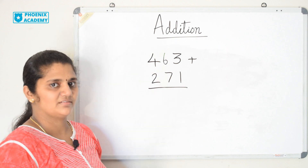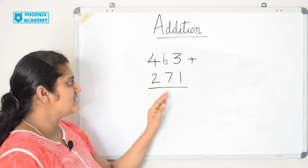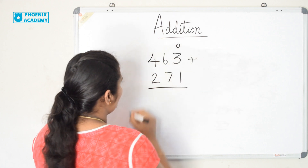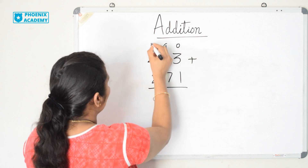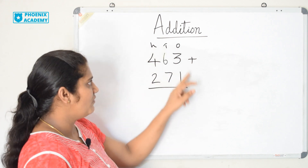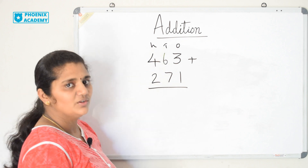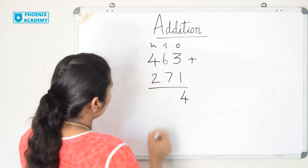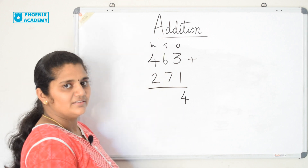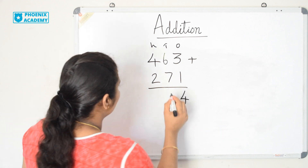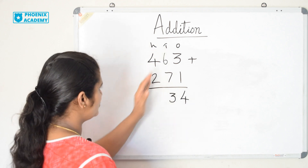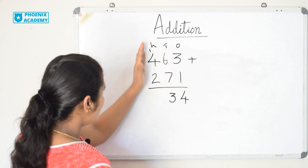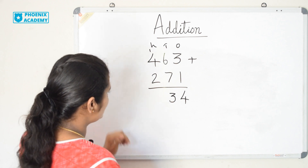Let us solve this example: 463 plus 271. 463 is 3 ones, 6 tens, and 4 hundreds. 271 is 1 one, 7 tens, and 2 hundreds. Let us add ones: 3 plus 1 is 4. Add tens: 6 plus 7 is 13. 13 is 3 ones and 1 ten, so we write 3 and carry 1 to the hundreds place. Add hundreds: 1 plus 4 is 5, plus 2 is 7. The answer is 734.